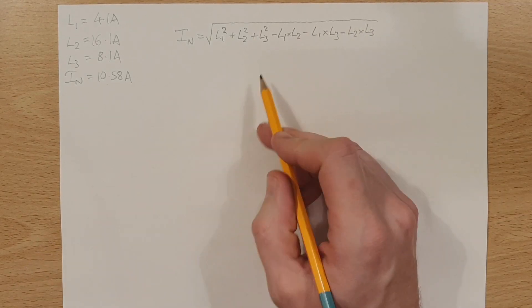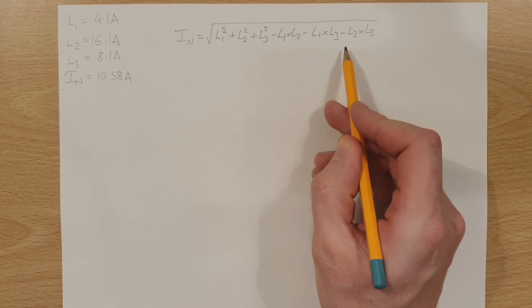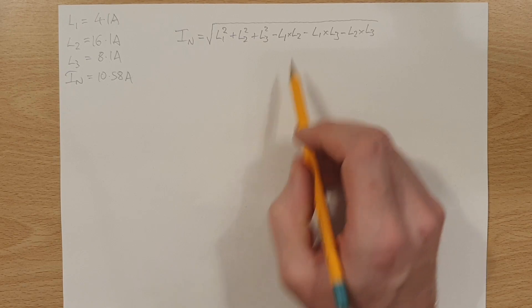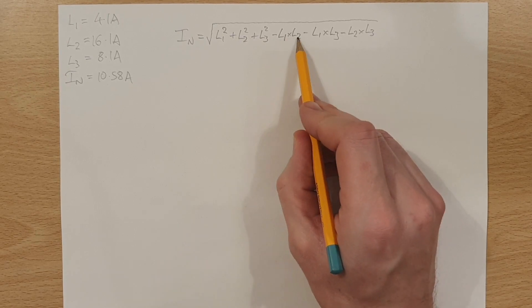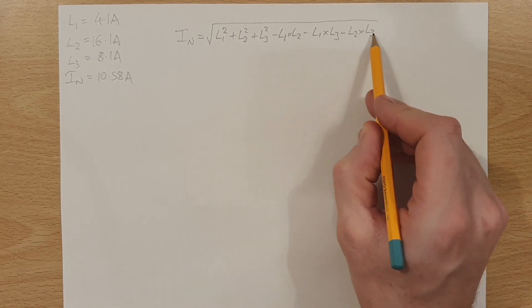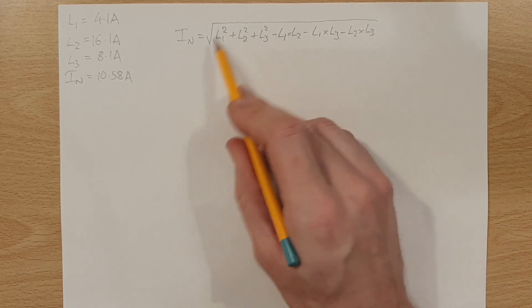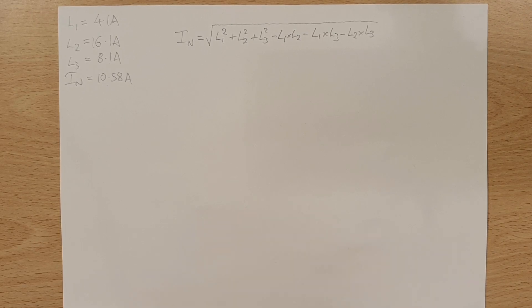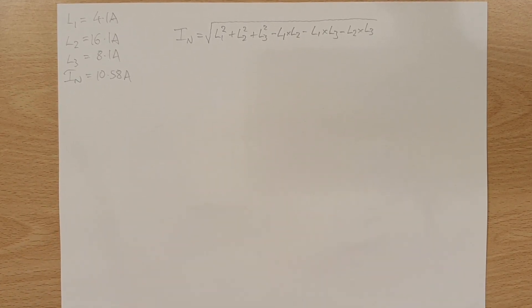Now, at first glance, that formula probably looks quite intimidating. But actually, if you think of this logically, it's actually not that bad. We're just squaring all the currents and adding them together. We're multiplying each current by each other current. And then we're just taking that away from this total and square rooting the lot. So if we kind of break it down into stages, it becomes a little bit easier. So let's do that now. Let's look at doing the individual stages.